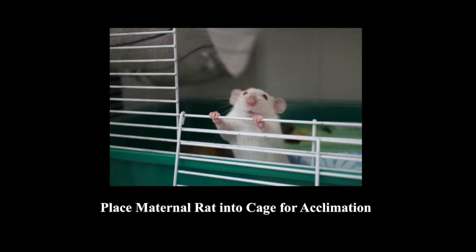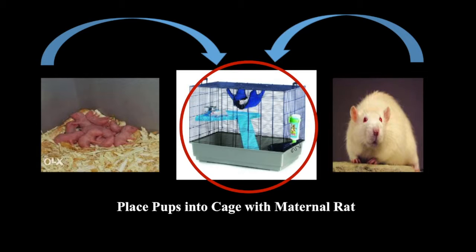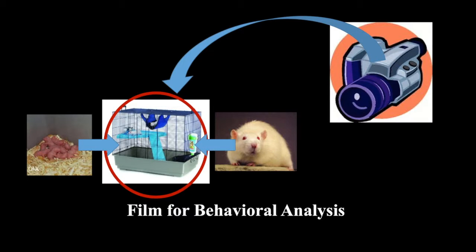Each mother rat is placed into a new cage and allowed to acclimate for 20 minutes. After the acclimation period, a litter of 8 pups is introduced. We will video record the mother's response to the pups, including latency to retrieve the pups, time spent grooming and nursing the pups.